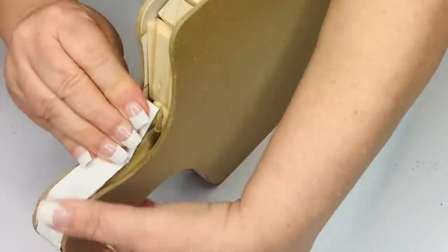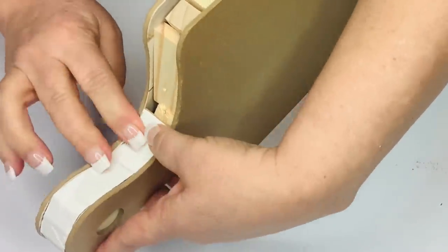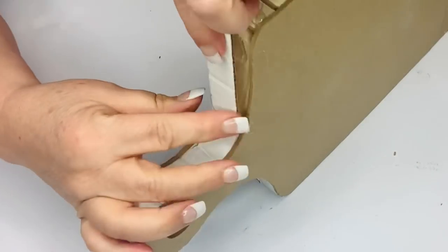And then once you get to the end of a piece, just start with a new piece and piece it together. And this is all going to be covered by our mastic and then eventually some paint.